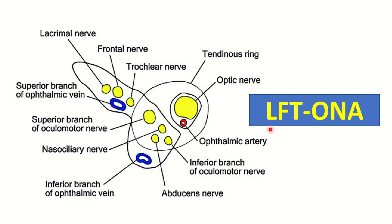Here there is a mnemonic: LFT ONA. L for lacrimal nerve, F for frontal nerve, T for trochlear nerve, O for ophthalmic vein, N for nasociliary nerve, and A for abducent nerve. This mnemonic is very important to remember all the structures which pass through the superior orbital fissure.